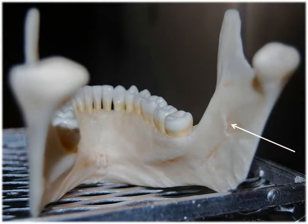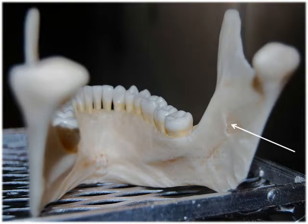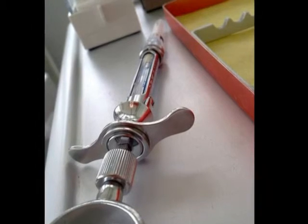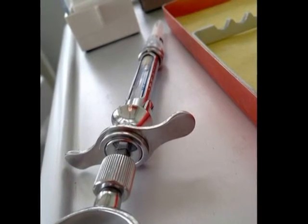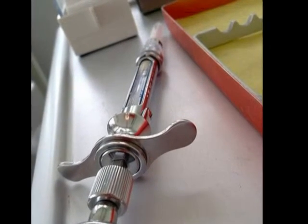On the medial surface of each ramus, you'll find the mandibular foramen, which allows passage of the inferior alveolar nerve and its associated blood vessels. Both of these foramina are also sites used by dentists when injecting anesthetics.